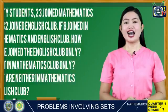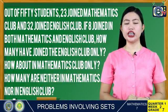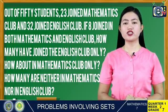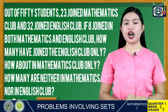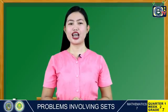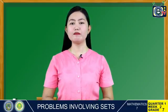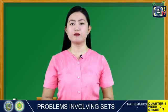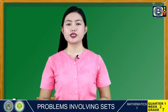Try to look at this example: out of 50 students, 23 joined the Mathematics Club and 32 joined the English Club. If eight joined both Mathematics and English Club, how many have joined the English Club only? How about the Mathematics Club only? How many are neither in Mathematics nor in English Club? In solving set problems, it is easier to follow the technique: Start Inside Out. This is done by putting the common elements first in the center of the two or three overlapping sets.